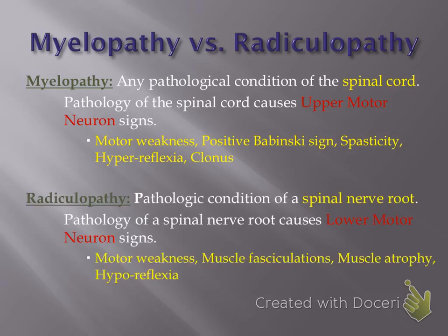Contrasting with radiculopathy — which is a compression of the spinal nerve roots — this produces a lower motor neuron presentation with weakness, fasciculations, atrophy, and hyporeflexia. Most of the time with acute radiculopathy, you're going to get pain, paresthesias, as well as possibly weakness and hyporeflexia. The fasciculations and atrophy are severe signs that don't develop until there's been prolonged compression of that nerve.